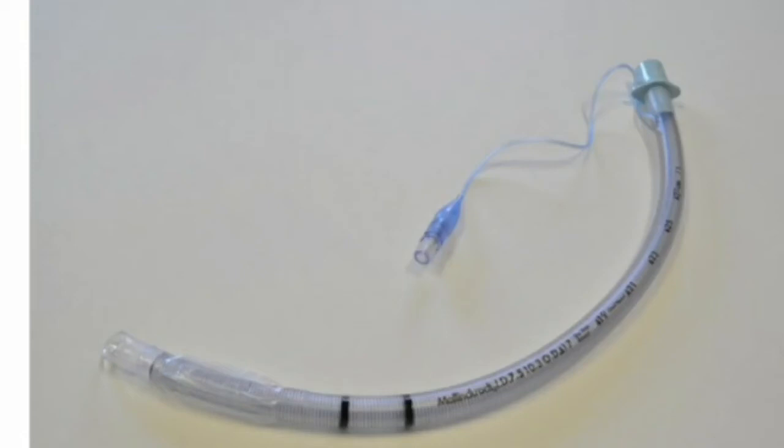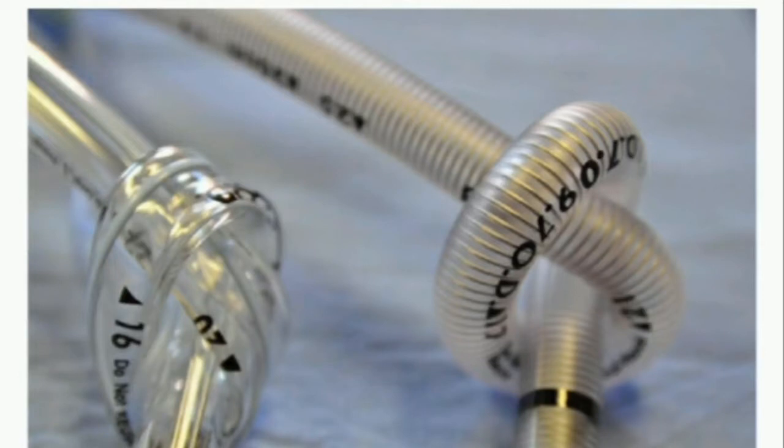By being more flexible than standard ET tubes, armored tubes are less likely to kink and occlude when bent to an angle, which is their biggest single advantage over standard ET tubes.